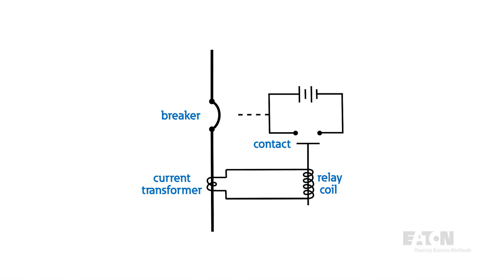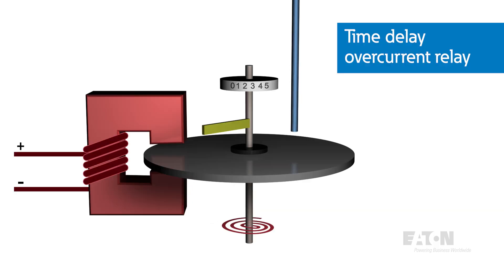An electromechanical protective relay uses the magnetic field produced by an electromagnetic coil to close a contact, initiating a breaker trip. For example, a time-delay overcurrent relay is made up of a rotating disc with one side of an electrical contact held in place by a spring.